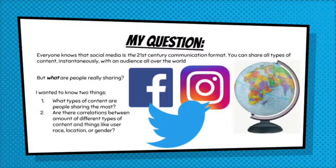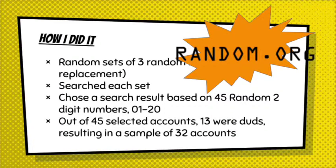It's important to note that the population I'm studying is the actual posts themselves, not the users. First, I collected random sets of three random letters with replacement, then searched each set in the Facebook search bar. Through each set of results, I chose a Facebook user based on 45 random two-digit numbers 0 through 20. Out of 45 accounts, 13 were private, so my sample ended up being 32 accounts.